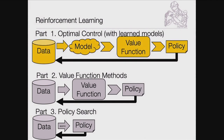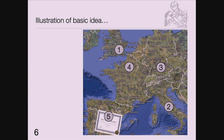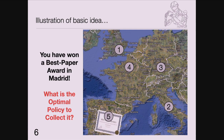Let's start with optimal control from learned models. Consider a problem you all have to solve once in a while: you've won the best paper award and you want to find an optimal policy to get to the conference. You have a network of flights, costs for those flights, a final reward of a thousand dollars, and you want to figure out how to maximize your return. Every computer science student knows one graph algorithm which solves this problem: Dijkstra.